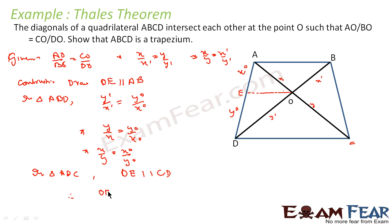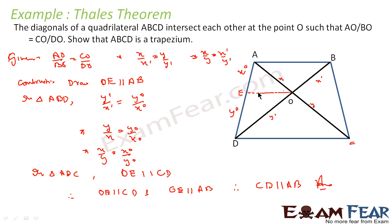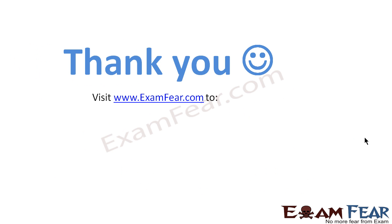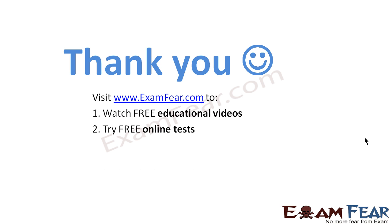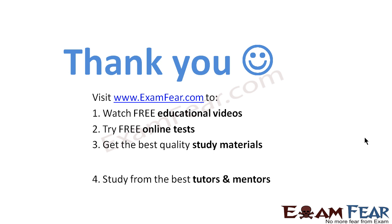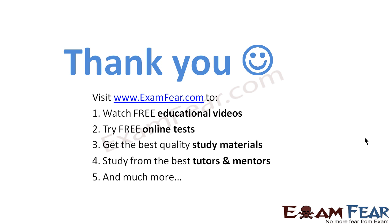Now we have OE parallel to CD and OE parallel to AB, therefore CD is parallel to AB — and that is our answer. What we have done is construct line OE parallel to AB, prove that OE is also parallel to CD, and since one line is parallel to two lines, the other two lines are also parallel. Thank you. Visit examfear.com to watch free educational videos, try free online tests, and get the best quality study materials. Thanks once again.